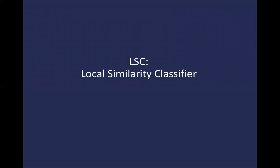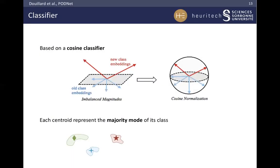Let's see our LSC local similarity classifier. Our classifier is based on the cosine classifier. The cosine classifier is a dot product between the features and the weights, where both are L2 normalized. The cosine classifier reduces forgetting by enforcing an identical magnitude on all class weights, both those associated to old classes and those associated to new classes. Each centroid is in the same latent space as the features, and each centroid represents the class majority mode.